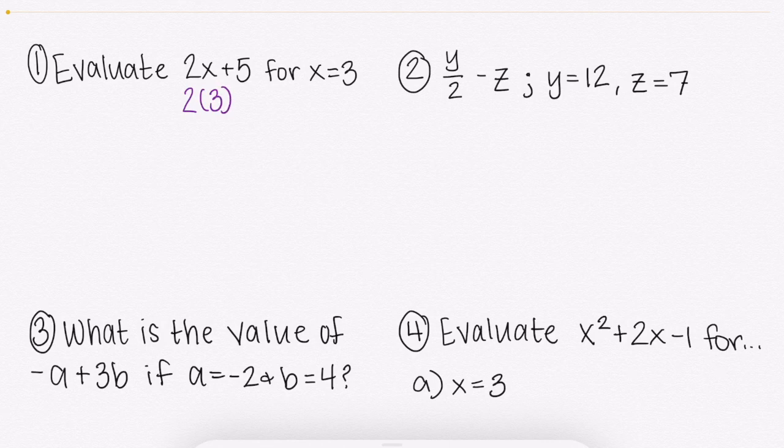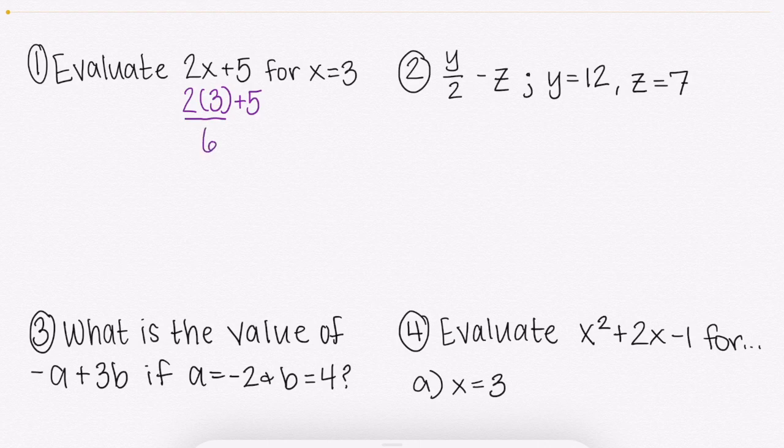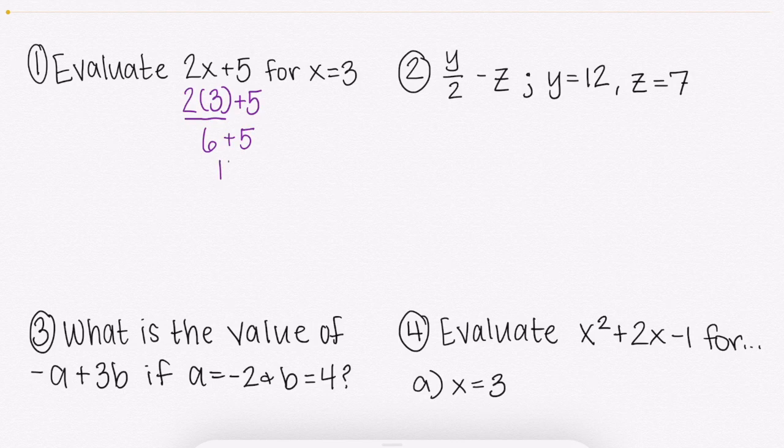Remember, we don't actually have letters in math. We have variables which represent numbers. That x was just there to represent 3. Now we can go ahead and solve using our order of operations, which if you need a reminder on that, I do have a video on that, so go ahead and take a look at that. But we should know we're going to start with multiplication first, which when we have two numbers next to each other, that is not 23. That is 2 times 3, which would get us 6. After we multiply, then we add 6 plus 5 would get us 11. That would be our answer.